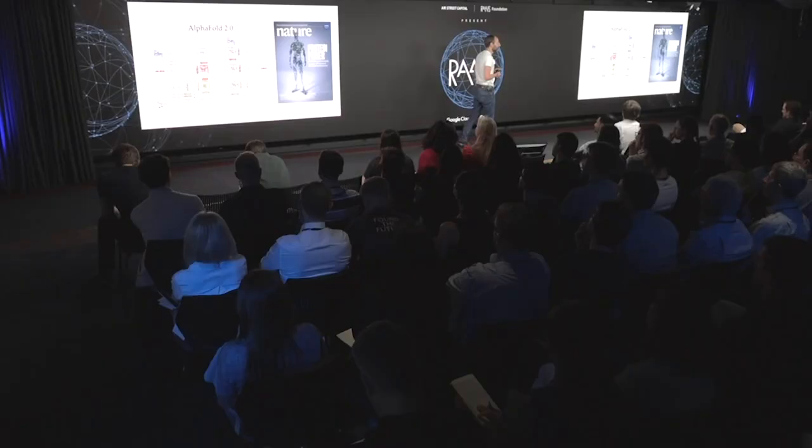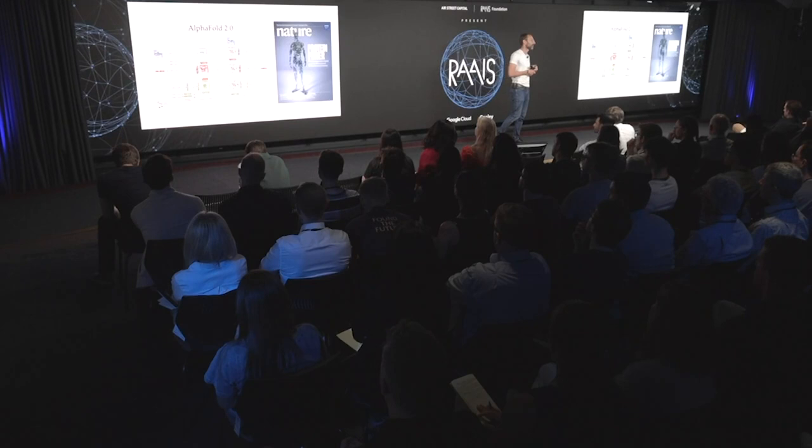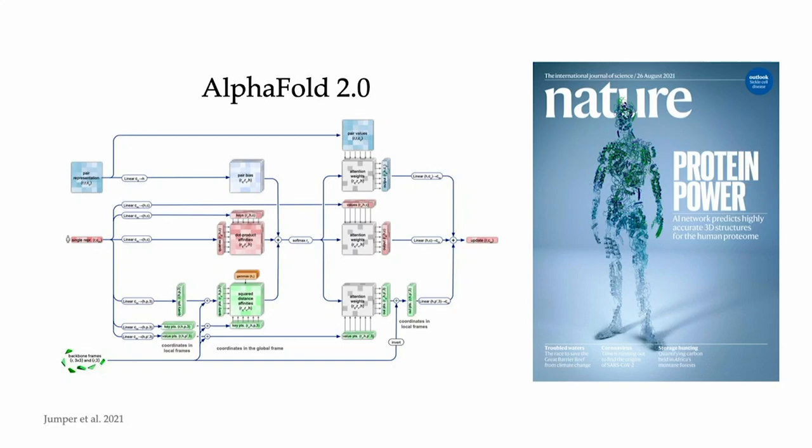Talking about applications in this field, everybody here has probably heard about AlphaFold — DeepMind's entry with a big bang into structural biology, predicting protein folding from amino acid sequences, one of the holy grail problems in this field. AlphaFold 2 is based on geometric principles as well. One of the important pieces in the architecture is what they call invariant point attention — a form of graph neural network transformer that has exactly these equivariant properties.